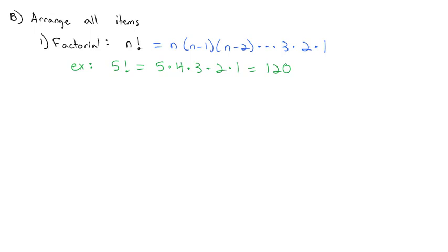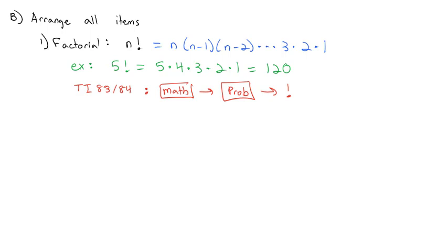We can do these on our calculator really fast. If you have a TI-83 or 84, there's a button that says math. If you select math and scroll over to the probability option, you'll see the factorial option under the probability menu. So you could type in 5, math, probability, factorial, and when you hit enter it'll give you 120. If you have a regular scientific calculator like a TI-30, there's probably just a probability button, and when you click it you can scroll over to the exclamation point. Type in 5, probability, factorial, enter — it'll give you 120.